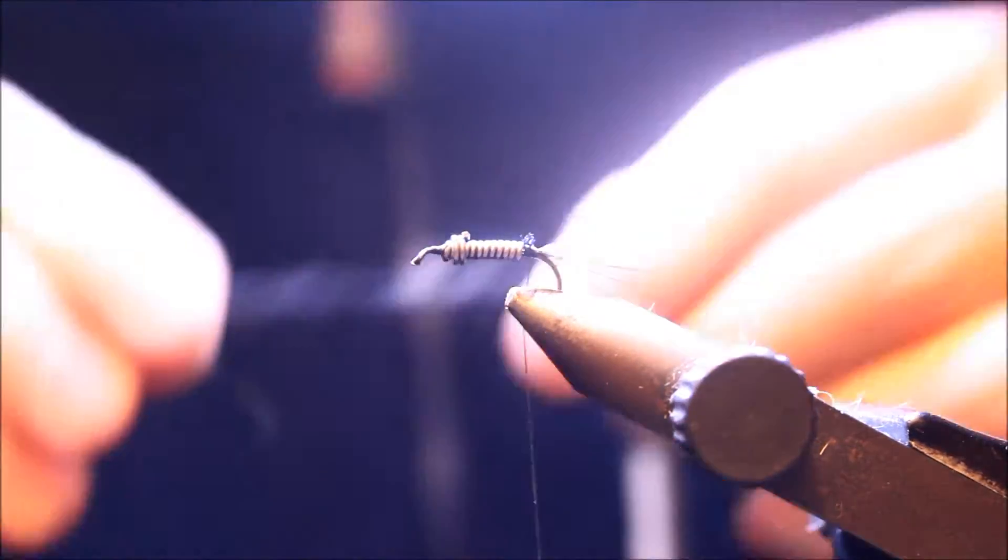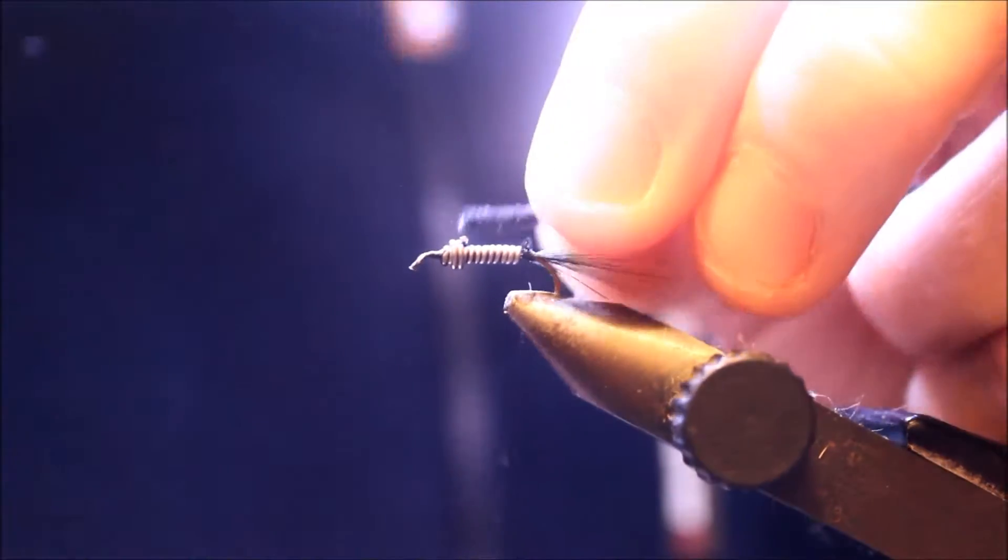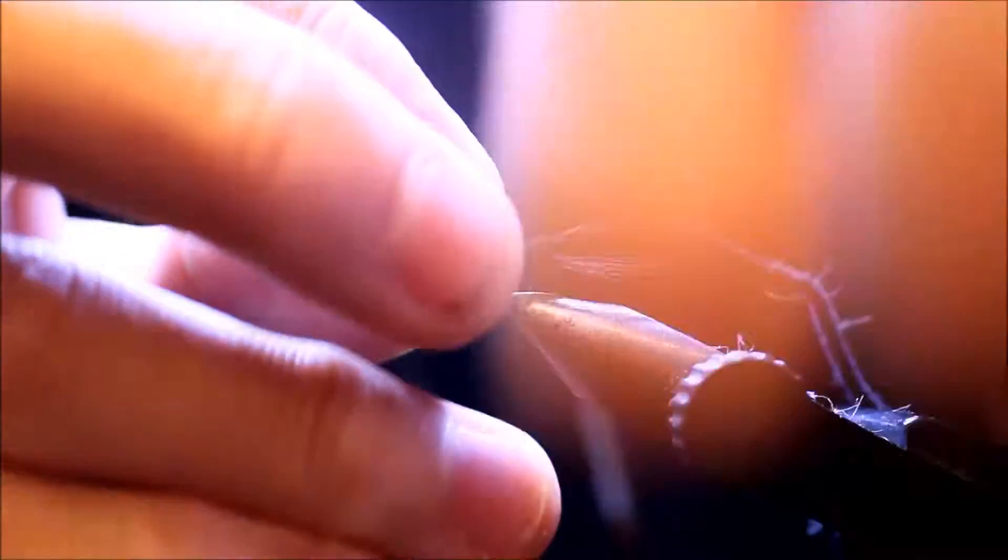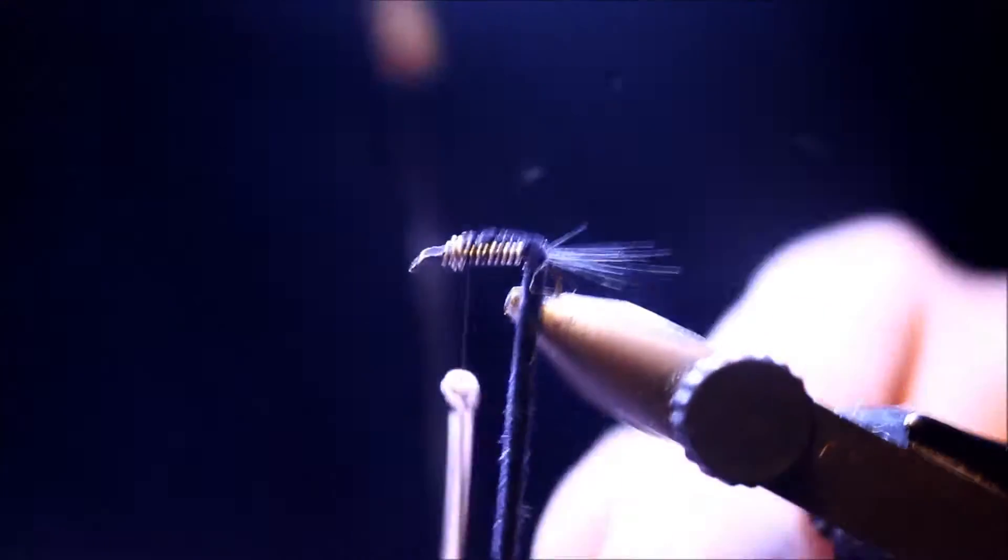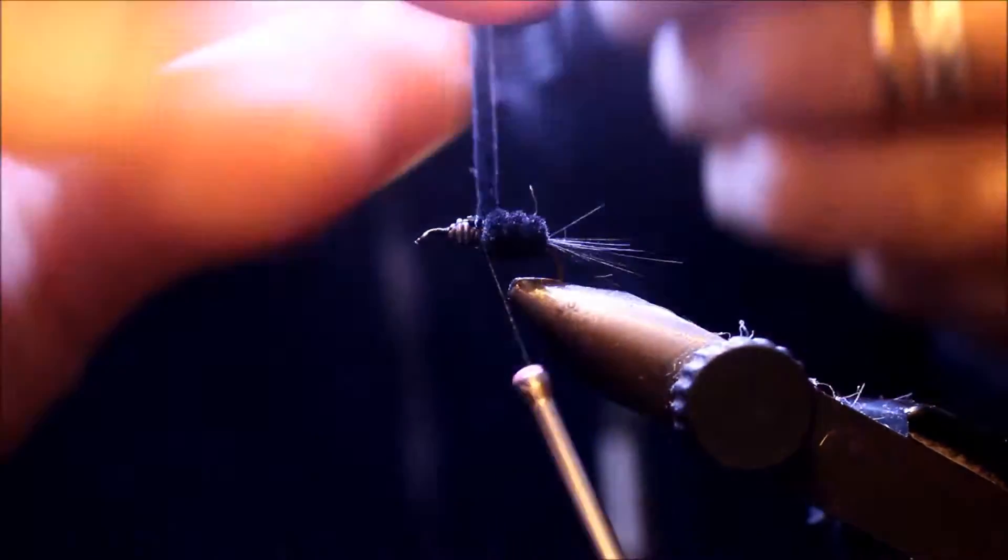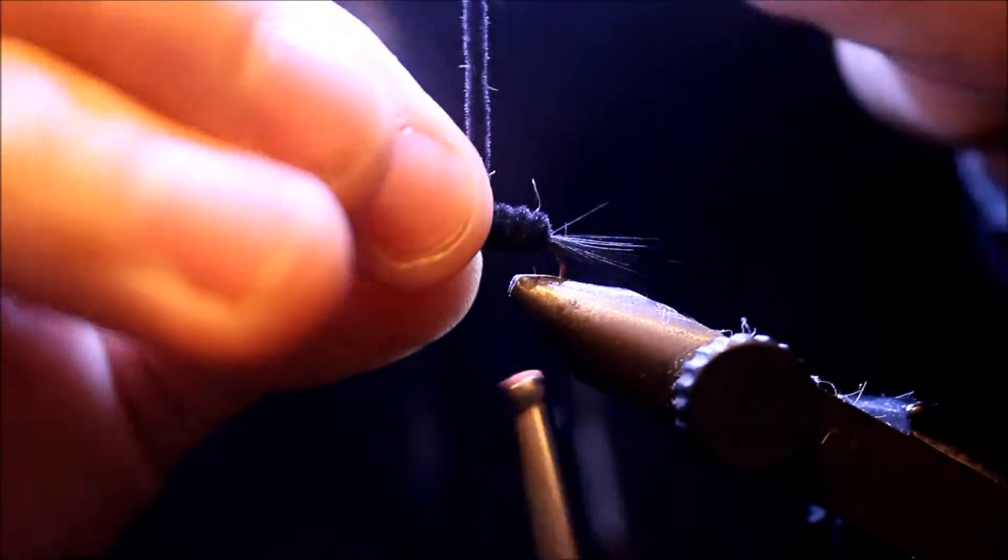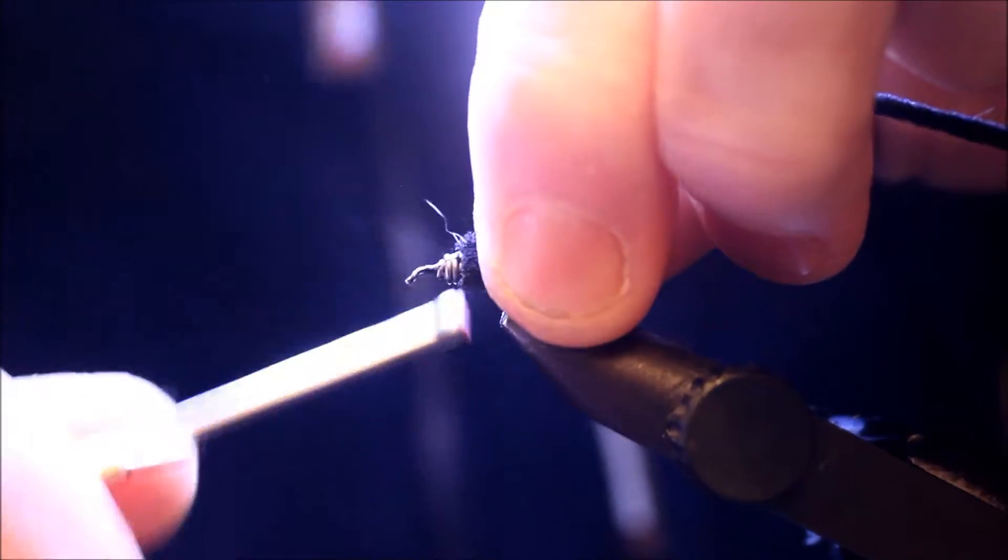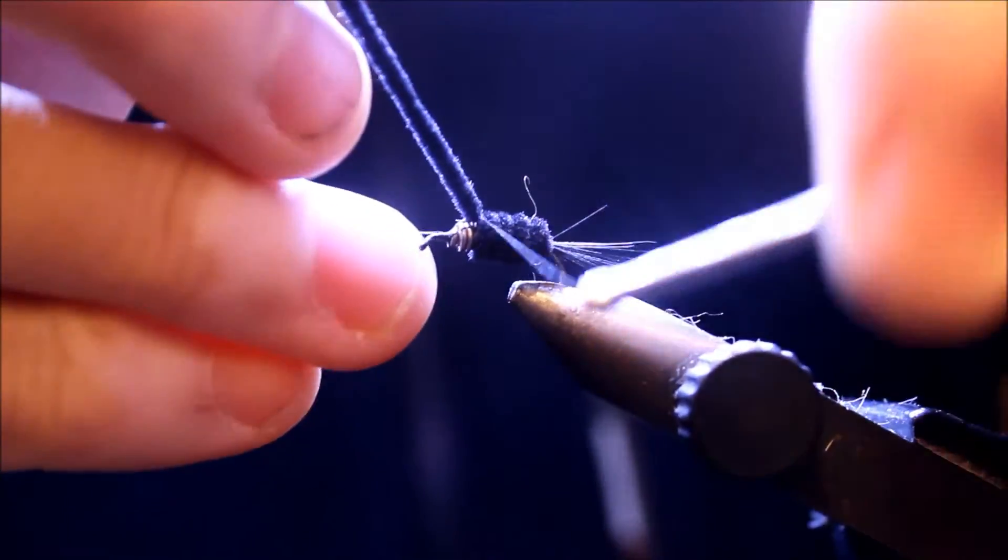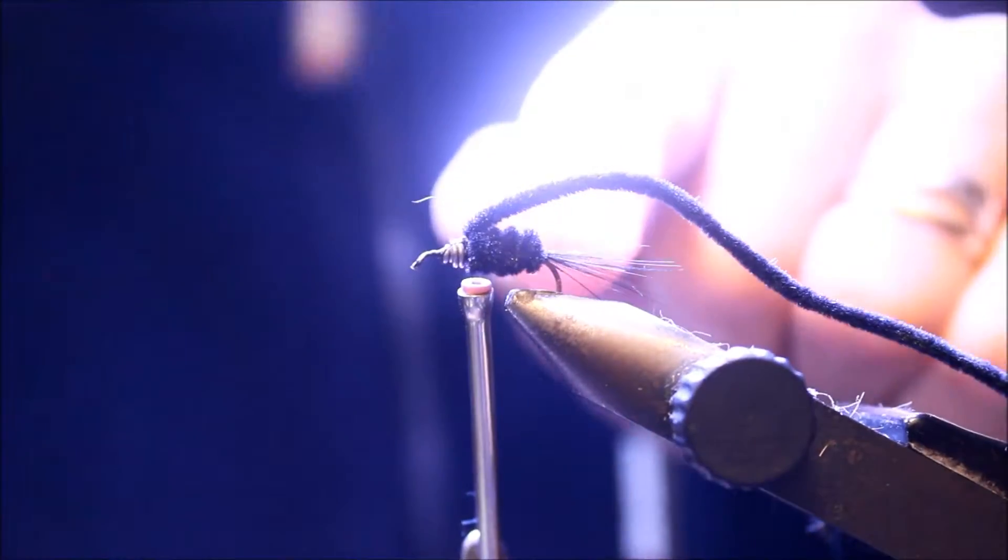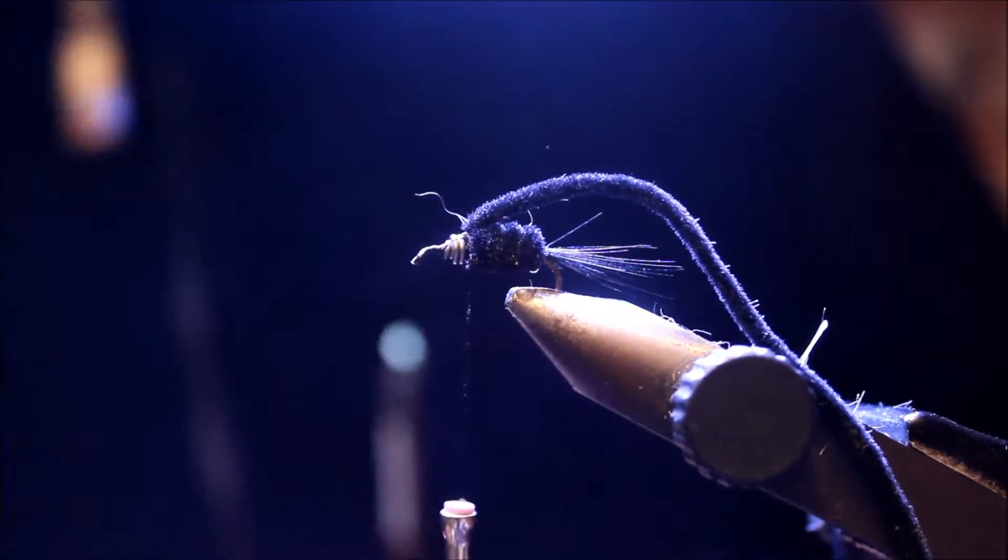Ensuite je vais venir poser une chenille micro chenille noir avec laquelle je vais former un corps en spires jointives. Quatre tours et je bloque sur le dessus. Deux tours devant, deux tours derrière, je refais deux tours derrière pour être sûr et deux tours devant. Je laisse en attente cette chenille là qui viendra dessus après.